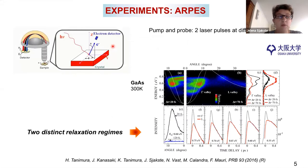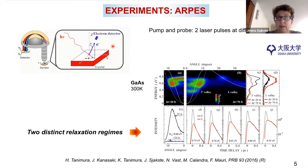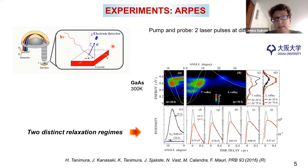The experiments which allow us to follow the dynamics of highly excited electrons are mostly ARPES — angle and time-resolved photoemission experiments. Usually you have two laser pulses: one is the excitation and the second one is the probe. Because the delay between the pump and the probe can be varied, you can follow the dynamics of electrons.